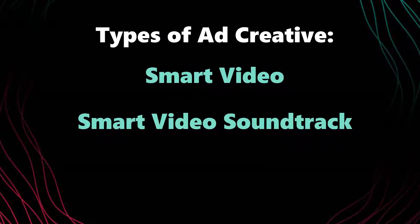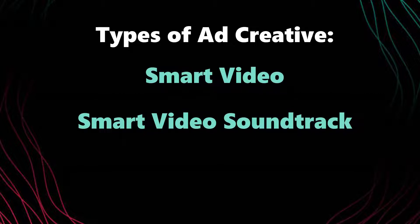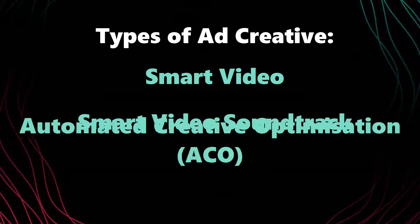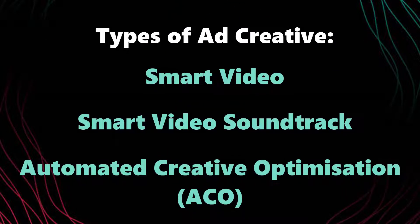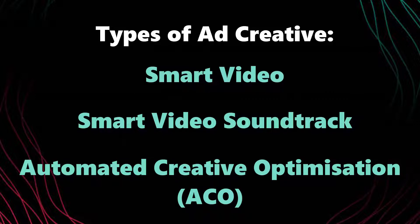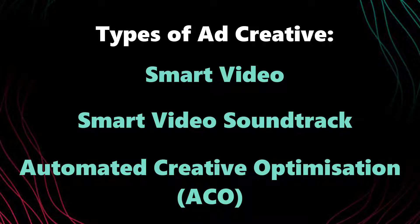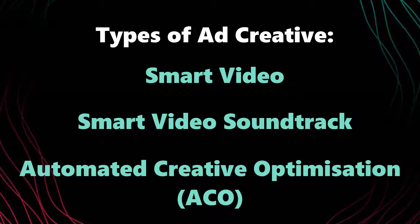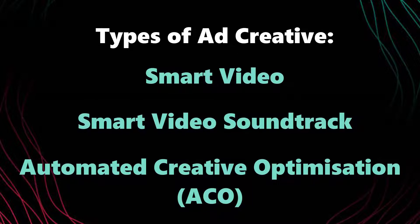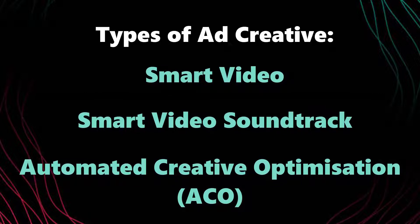You also have Smart Video Soundtrack — this form of ad creative allows you to upload video files up to 500 MB, and the platform will then suggest music that simply syncs to the content. Next is Automated Creative Optimization, or ACO. ACO is a setting applied to ad groups which allows you to upload up to 10 images and videos alongside text descriptions between 5 and 100 characters.